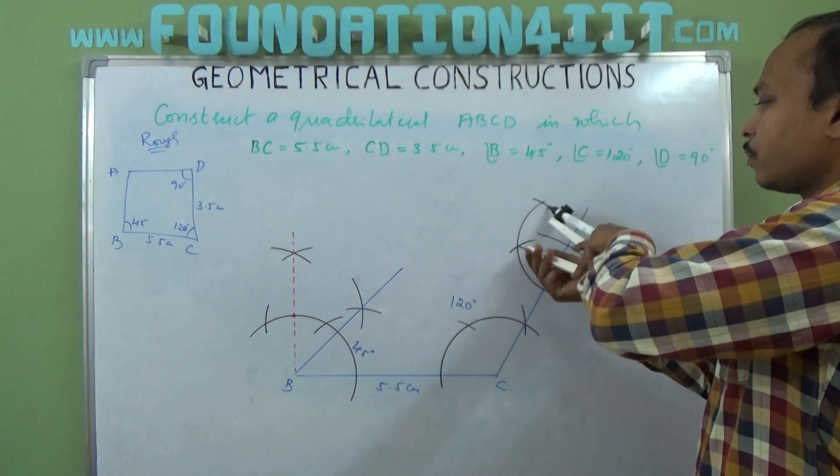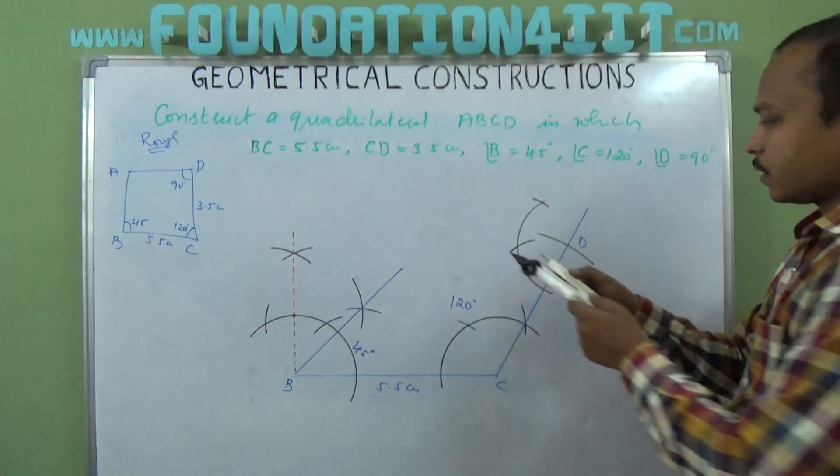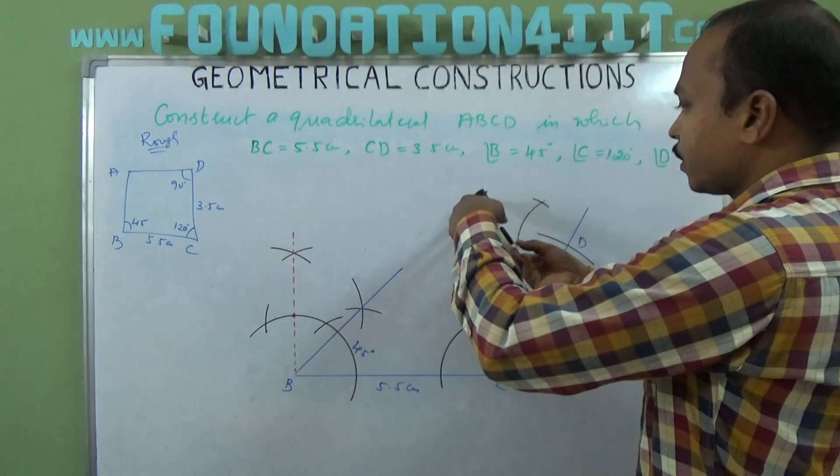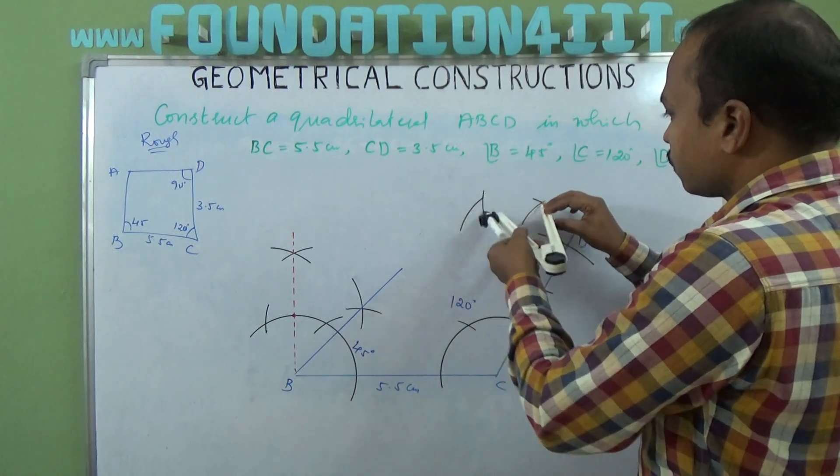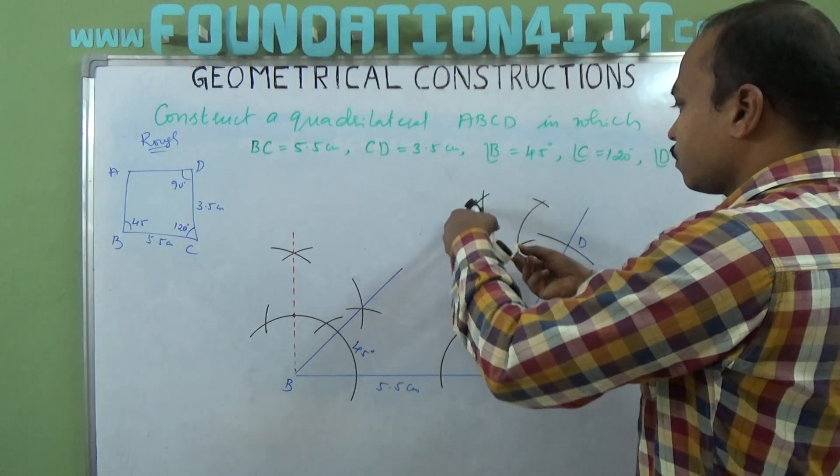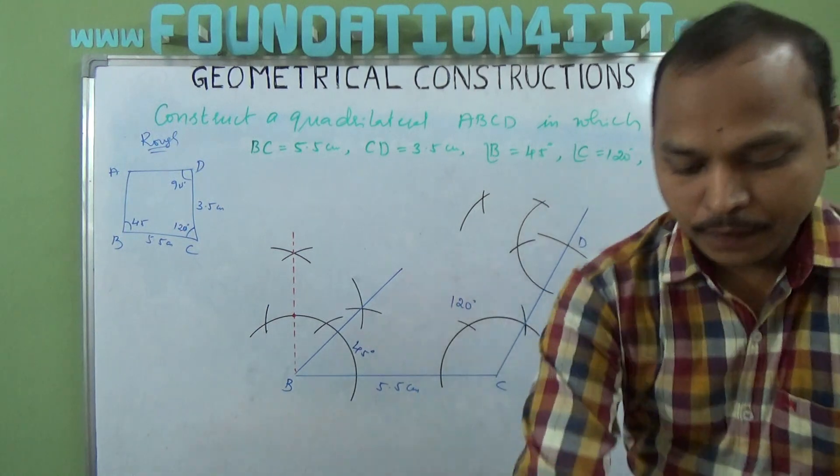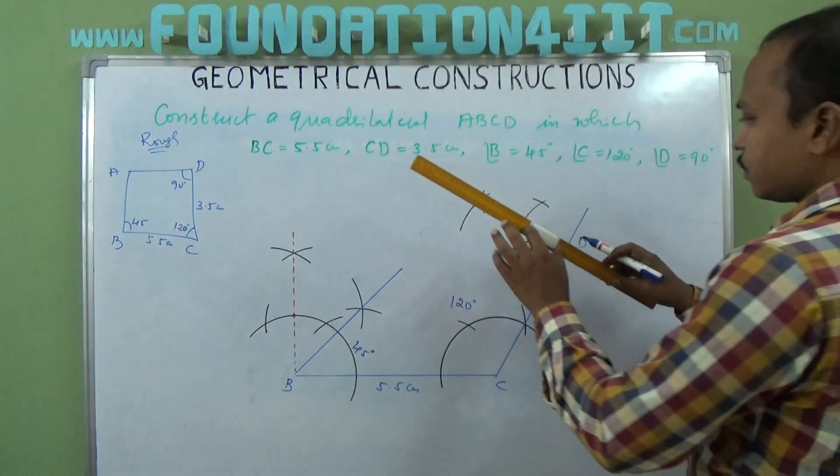Bisect this. Same radius from this point. Extend, extend. Then you can join this D.